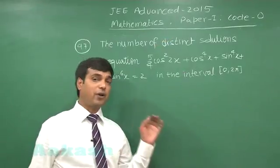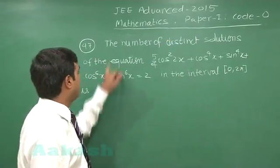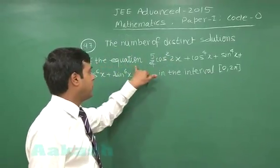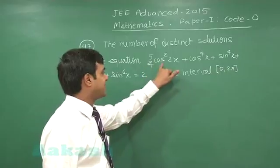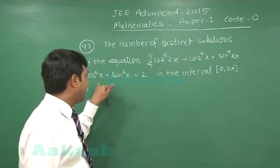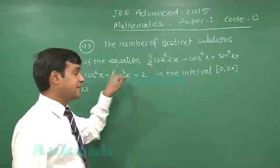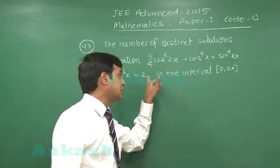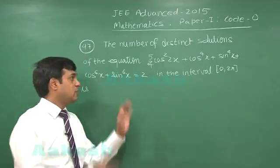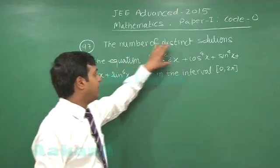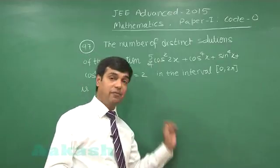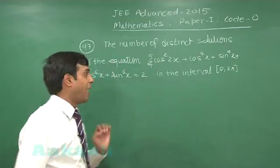Question number 47, from trigonometry. The number of distinct solutions of the equation (5/4)cos²(2x) + cos⁴x + sin⁴x + cos⁶x + sin⁶x = 2 in the interval [0, 2π] is to be determined. We simply have to simplify this given equation and check how many solutions exist in the interval 0 to 2π.